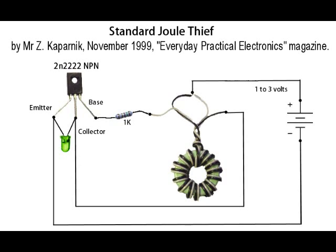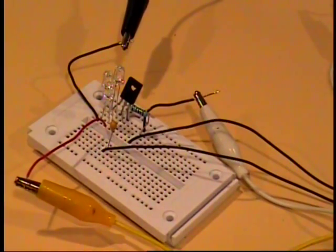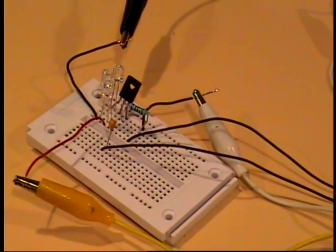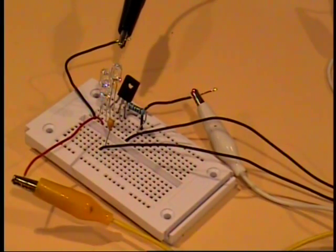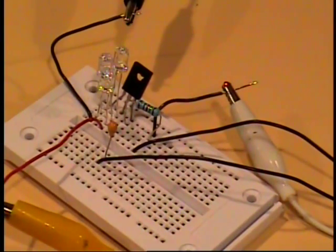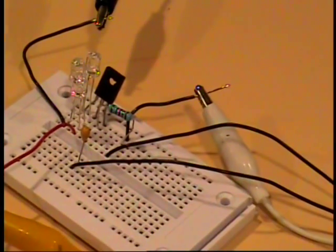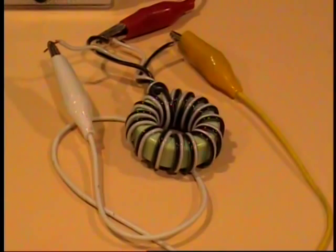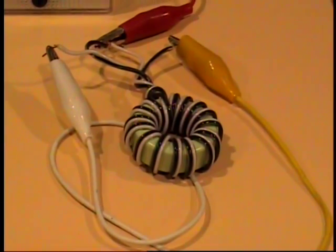This is the standard Joule Thief circuit, and this is my proposed enhancement. Here on my breadboard is the traditional Joule Thief. All the standard components are here, exactly as pictured on the schematic, including the traditional bifilar wound toroid coil.